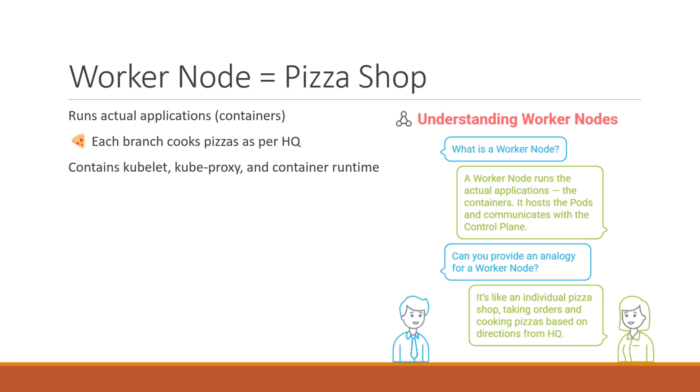Next is the worker node. This is where your applications actually run. In our analogy, it's a pizza shop branch — it receives orders from the head office and cooks the pizza using its own kitchen staff, which represents a pod.